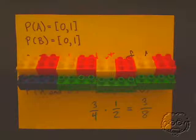That's the same answer to the question: what is the probability of randomly picking a combination where the large brick is green and the small brick is red? Three-eighths. I just multiplied three out of four for the large bricks times one over two for the small bricks.